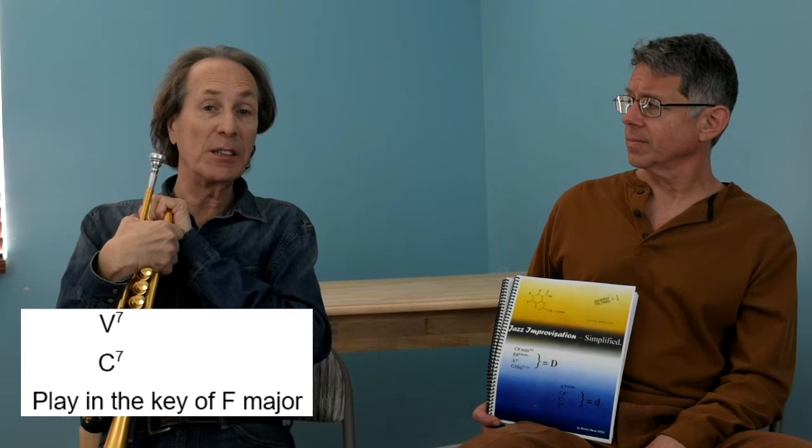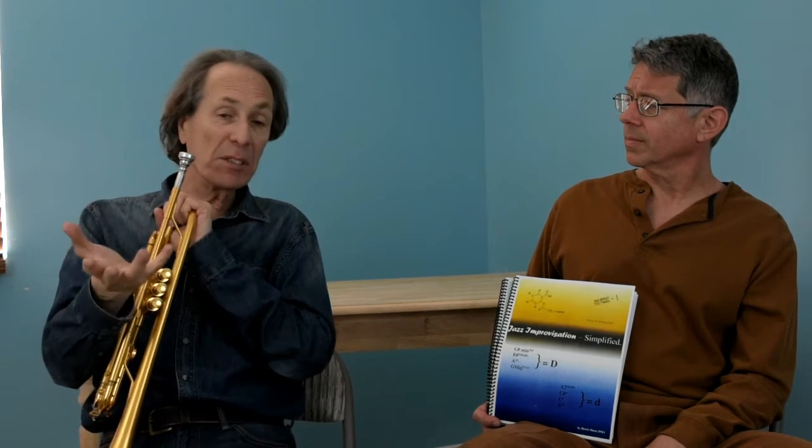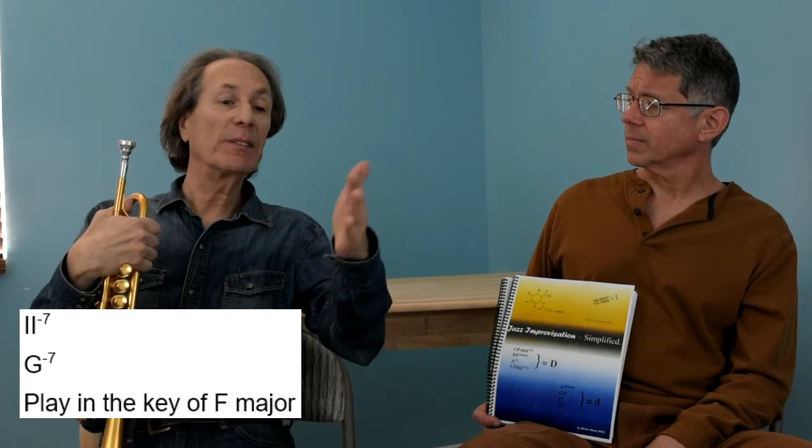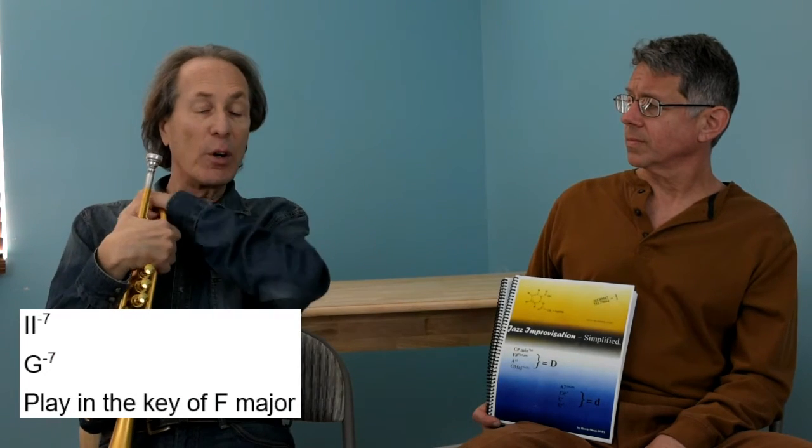If I just see G minor seven without the C seven, the same thing applies — minor chords are two chords, so G minor seven is the two chord of F and I'll improvise in F. Of course this is the rule and there are exceptions. Subsequent videos will address those situations, but the general rule is: whenever you see a minor chord, treat it as a two chord of a major key. When you see a dominant chord following, it's the five chord of the same key — there will be exceptions, but don't panic.